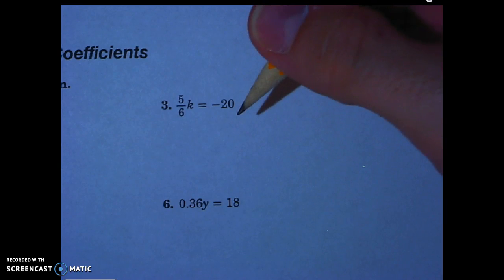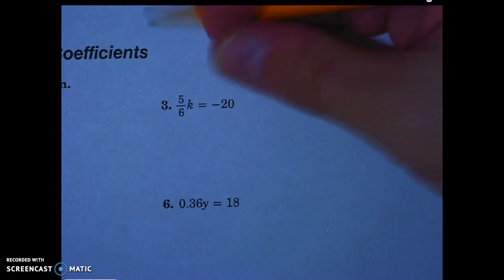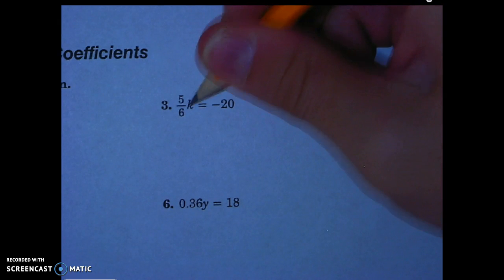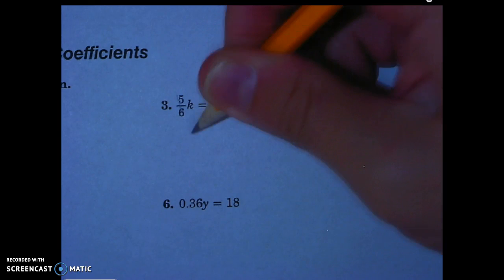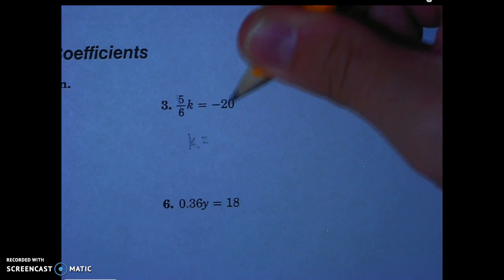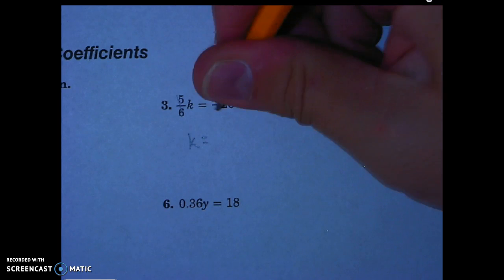I know that my rule for division is keep, change, flip when I'm dividing fractions. So again, since this is multiplying by 5 sixths, when I divide by 5 sixths, those will cancel, leaving the k by itself. It's on the other side where I have to divide by 5 sixths.